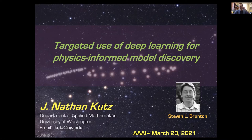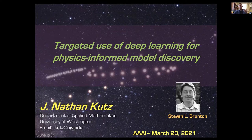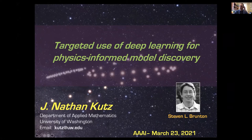This talk is about the idea of physics-informed machine learning broadly, and really the way I want to frame this is thinking about how we target the use of neural nets so that we can retain what we really value in physics — interpretable models. Models that you can explain, where you know the different mechanisms. This work is with Steve Brunton, and I'm going to illustrate the work of our students and postdocs; they're really the stars of this.